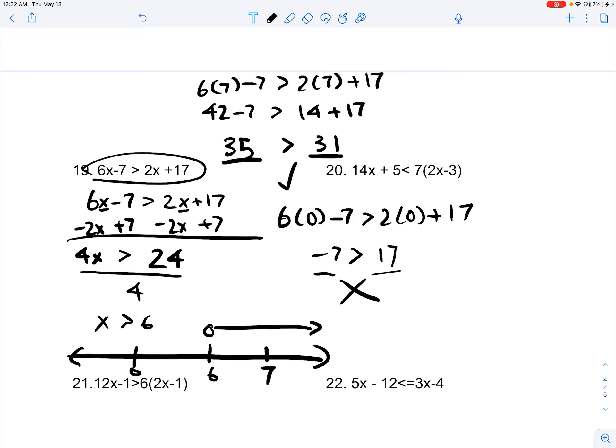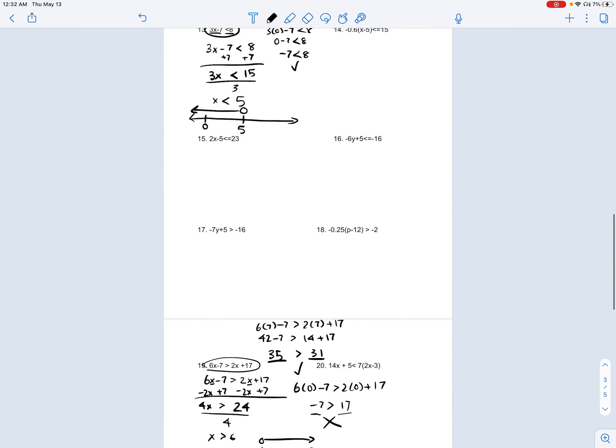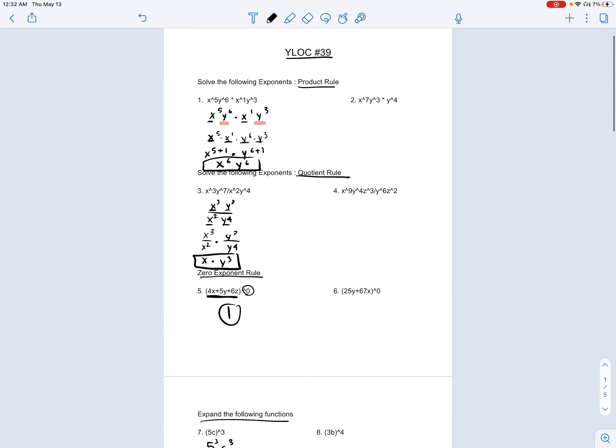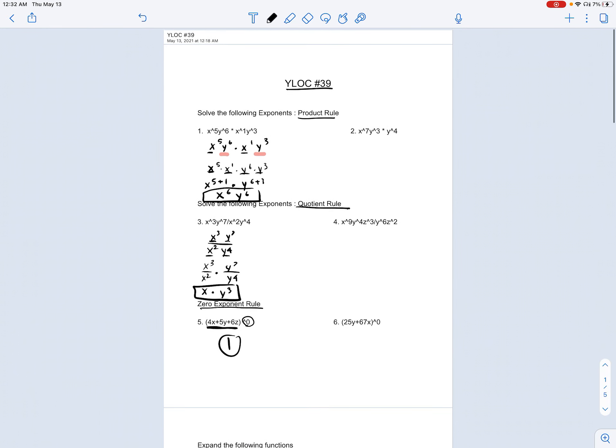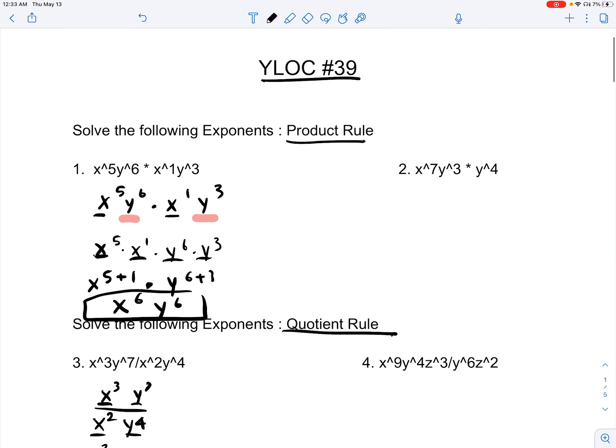So, we know that these values from 6 to all the way to less than 6 would be incorrect. It will not be a solution to the inequality. However, any value that is greater than 6 will be a solution to the inequality. That's it for Ylock number 39.